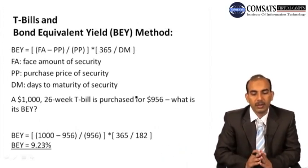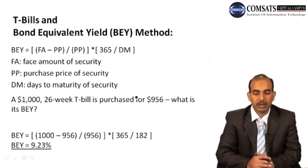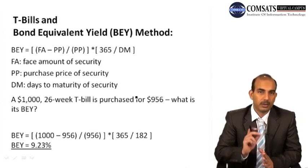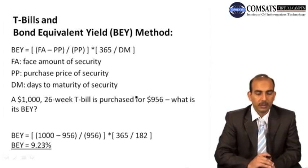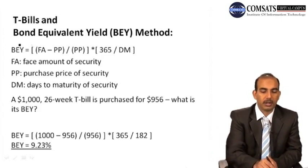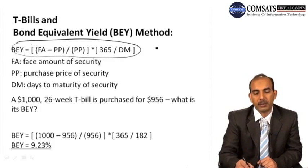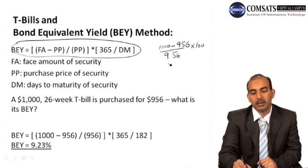How do we determine the yield on such investments? For example, if the firm purchases a security at $956, at maturity the firm will receive $1,000. We calculate the Treasury bill bond equivalent yield using the bond equivalent yield method referenced in our valuation of securities chapter. The formula is: sale price ($1,000) minus purchase price ($956), divided by purchase price, multiplied by 100 to get a percentage return. We then adjust this for the period — if the maturity period is 26 weeks (182 days), we divide by the days to maturity and multiply by 365 days to get the annual return.